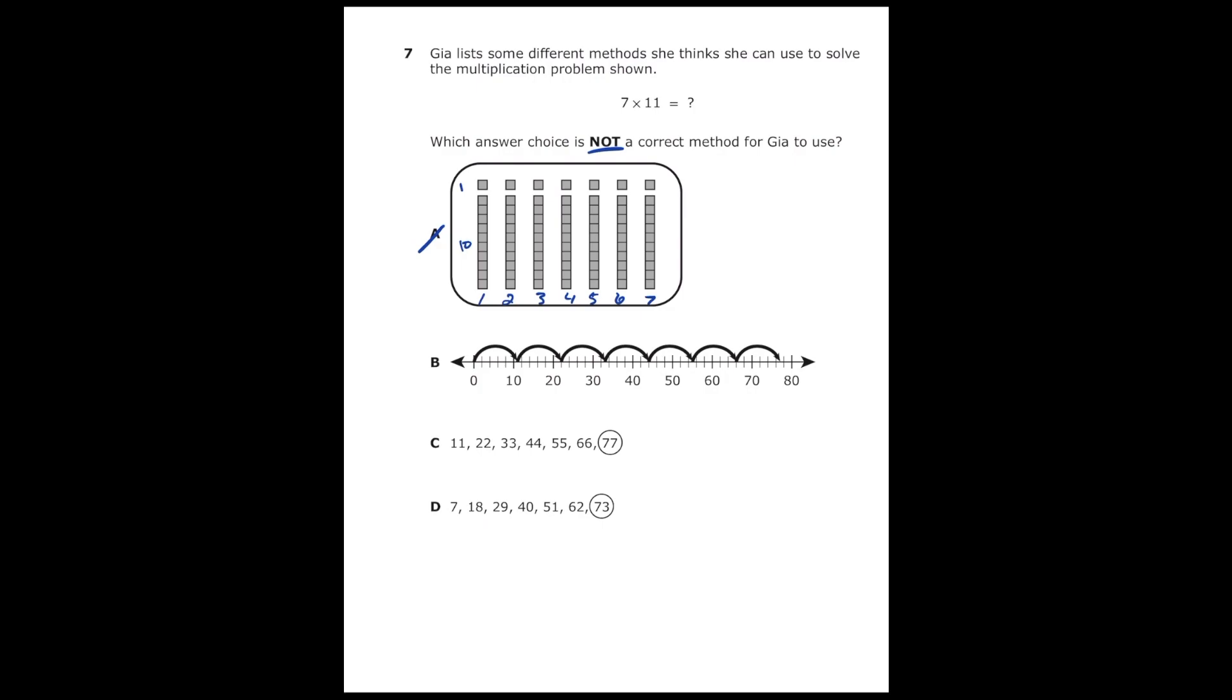Letter B, the arrow is jumping 11 to the right, and if we count up how many times they do that, we should end up getting seven times. So they're going 11 seven times, so that one would also be a good answer choice, but we need one that's incorrect. So letter B is not going to be it.